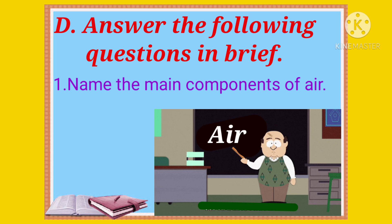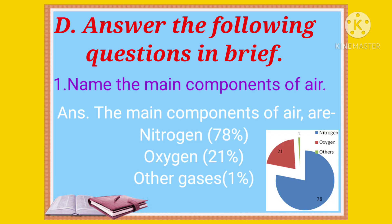Name the main components of air. Answer: The main components of air are nitrogen 78%, oxygen 21%, and other gases 1%.